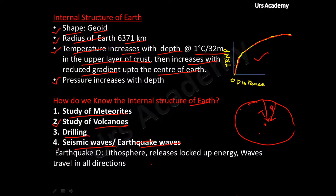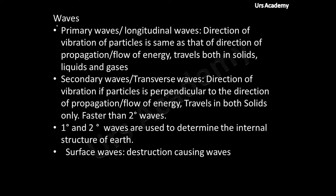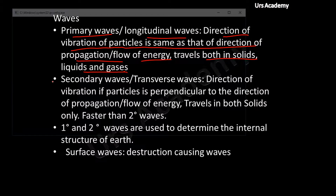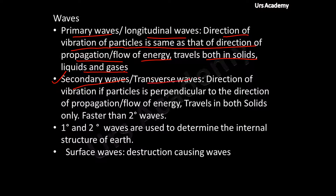Fourth, seismic waves. These have their origin from the lithosphere; the locked-up energy is released in the form of earthquake waves. There are different types: Primary waves or longitudinal waves — the direction of vibration of particles is the same as the direction of propagation of energy, and they travel in solids, liquids, and gases. Secondary waves or transverse waves — the direction of vibration is perpendicular to the direction of propagation, and they travel in solids only. Primary waves are faster than secondary waves, and both primary and secondary waves are used to determine the internal structure of Earth.